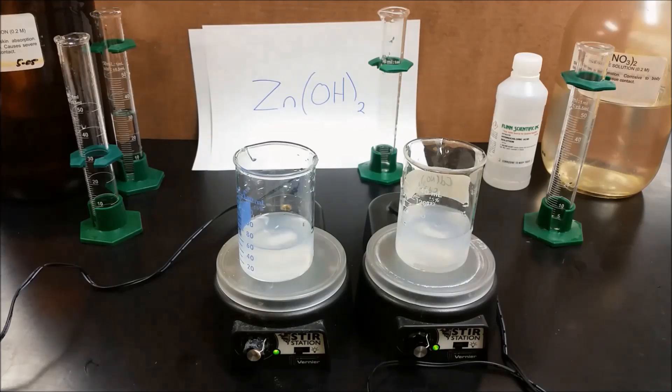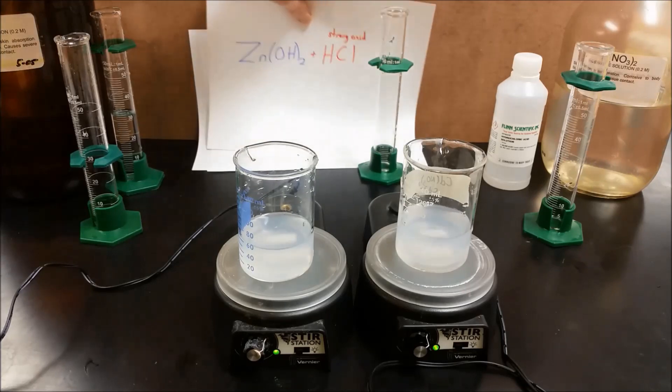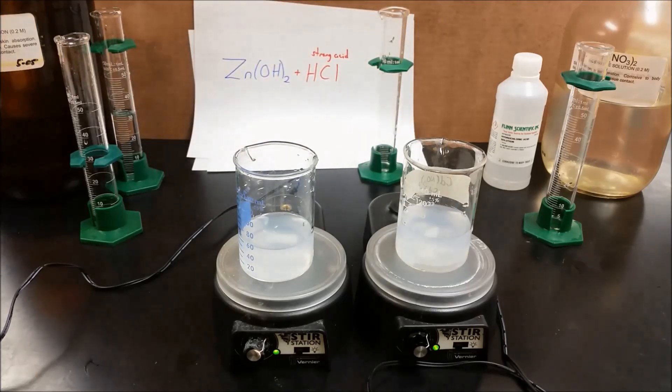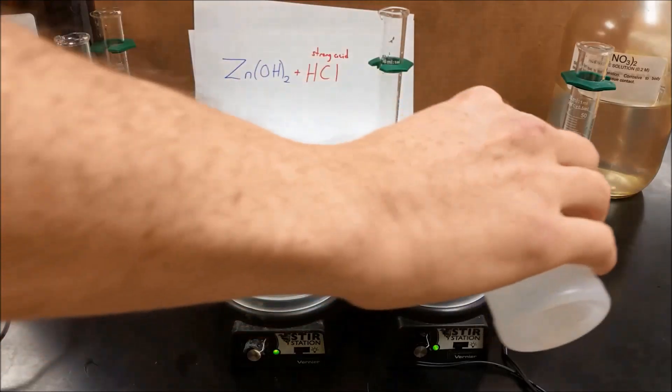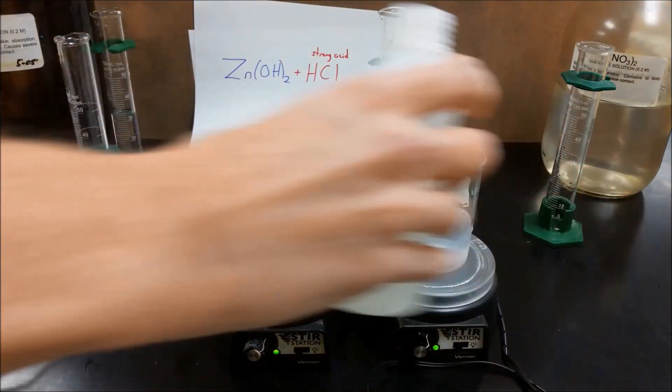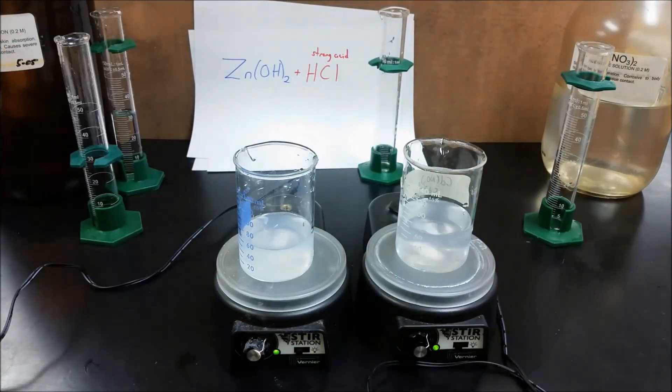The first one, I want to take the zinc hydroxide and add some strong acid to it. We're going to take some hydrochloric acid solution that's a little bit in excess here, a little bit higher concentration. So we see as the hydrochloric acid reacts with the zinc hydroxide that it ends up dissolving that precipitate away and there's a chemical reaction taking place.